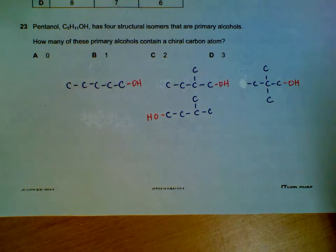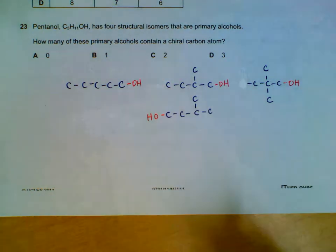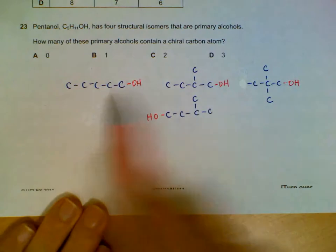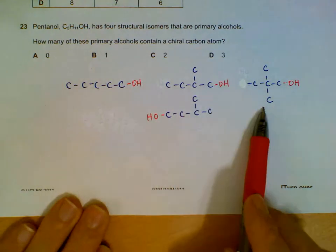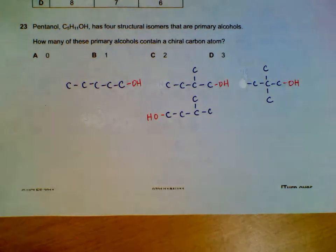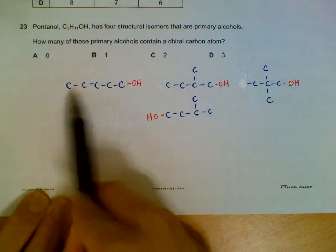Question 23: How many structural isomers of pentanol will contain a chiral carbon? I've drawn all four structures out. You can pause the video and check whether you have these four structures, and then from these four structures we will check the chiral carbons.